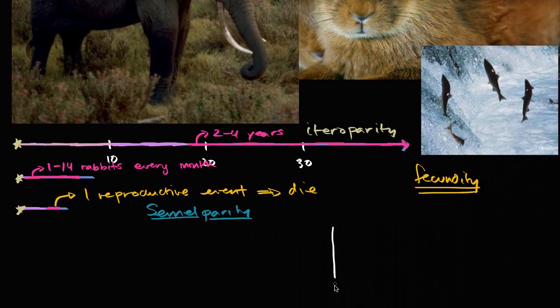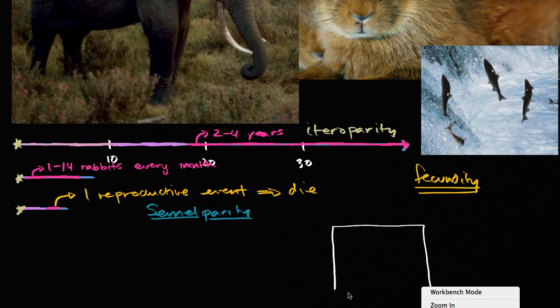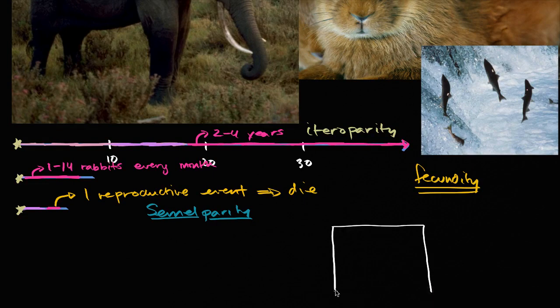And a framework you could use to think about it is, a species, they're trying to optimize survival. And not even of the individual, they're trying to optimize survival of their genetic information. That's what, and it's not like the species or the genes are actively trying to do it, but natural selection is doing that for them.